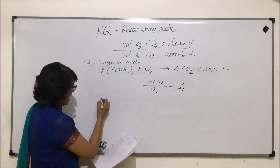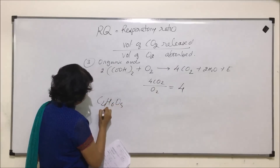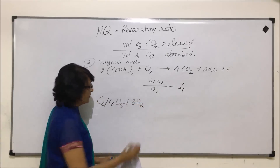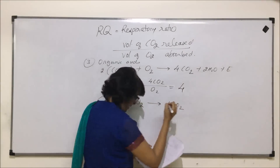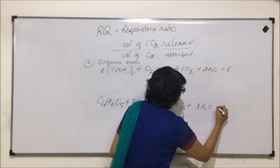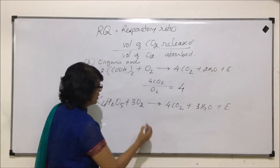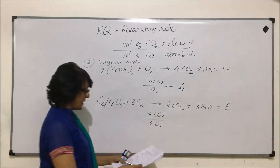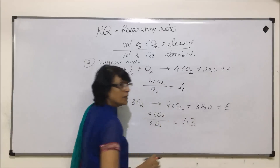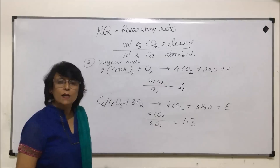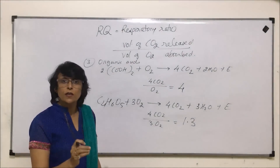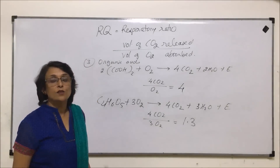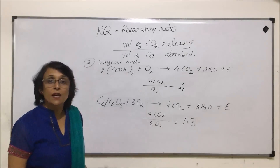We can take one more example: malic acid, C4H6O5. In the presence of 3 molecules of oxygen it gives 4 CO2, 3 water molecules and energy. Putting these values: 4 CO2 over 3 O2 gives more than 1 — in this case 1.3. The exact numbers are not important; what matters is whether RQ is 1, less than 1, or more than 1. Carbohydrate: 1. Proteins and fats: less than 1. Organic acids: more than 1.